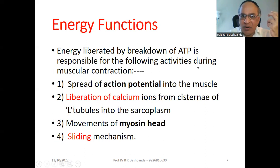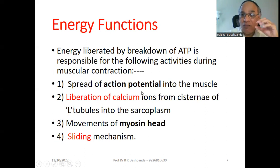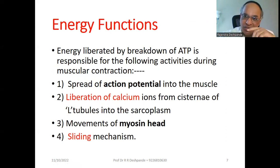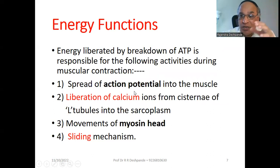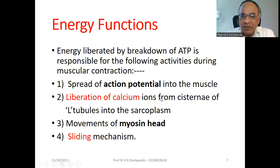Energy liberated by ATP breakdown is responsible for a series of activities: first, the spread of action potential in the muscle — resting membrane potential (RMP) changes to action potential, and that action potential must spread, which requires energy. Second, liberation of calcium ions from the cisternae of the T-tubules into the sarcoplasm.